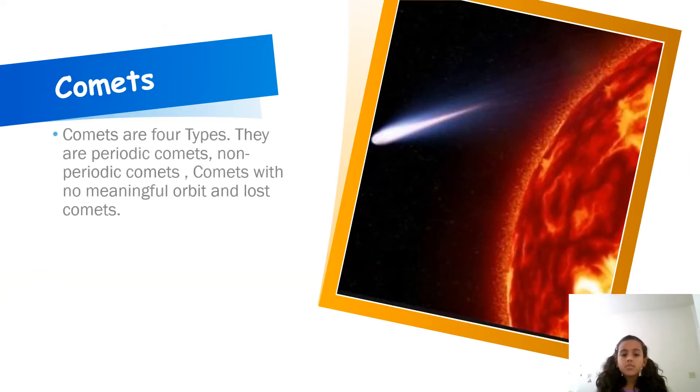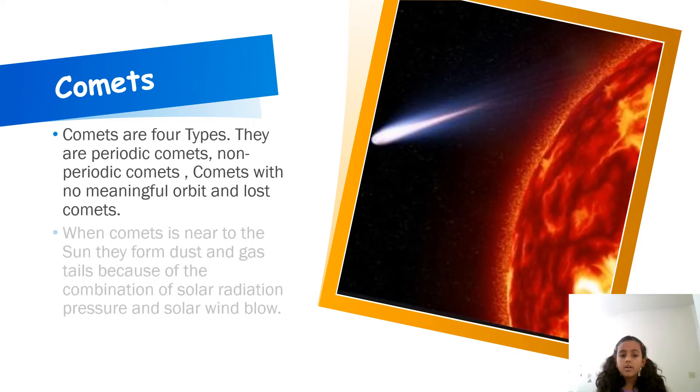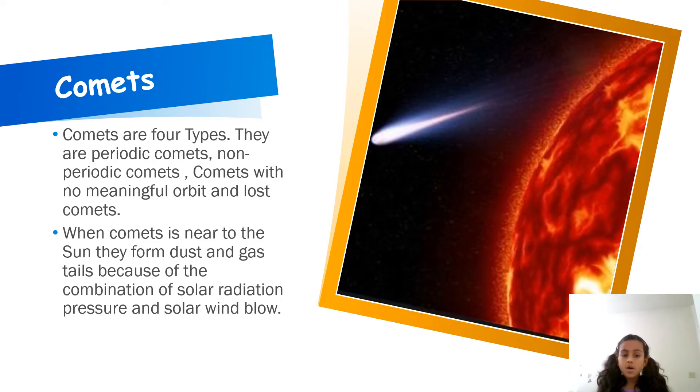Comets are four types. They are periodic comets, non-periodic comets, comets with no meaningful orbits, and lost comets.